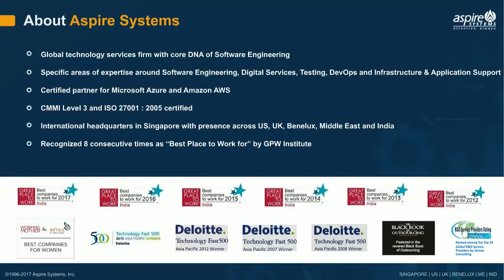Before we begin, I'd like to talk a little about the company I work for, Aspire Systems. Aspire Systems is a global technology services firm with core DNS software engineering, especially for products — what we call product engineering. We specialize in areas such as digital services, testing, DevOps, infrastructure, and application support. We are a certified partner for Azure and AWS.